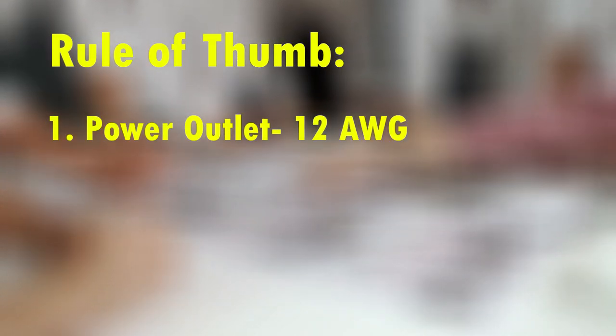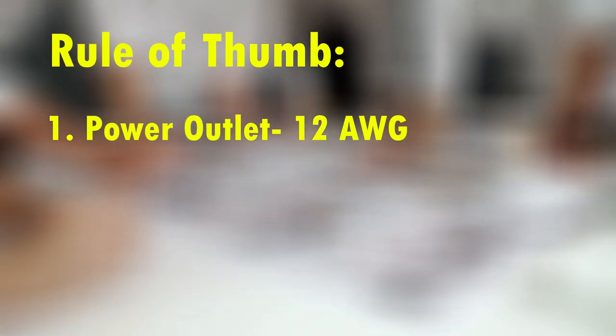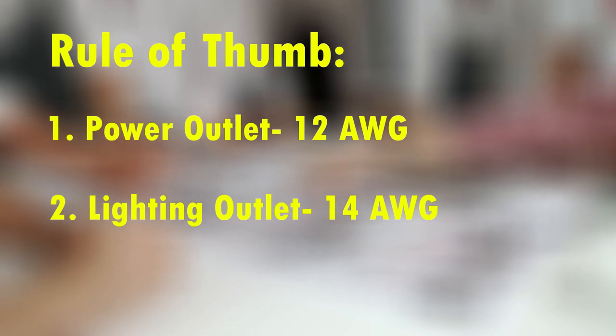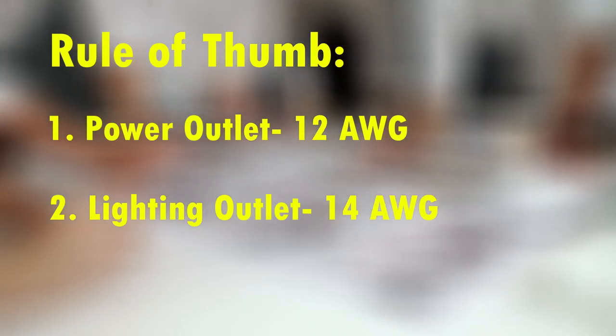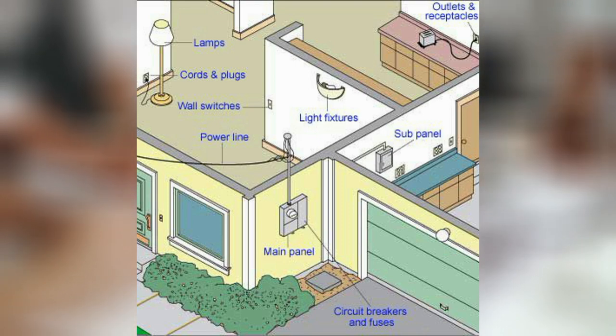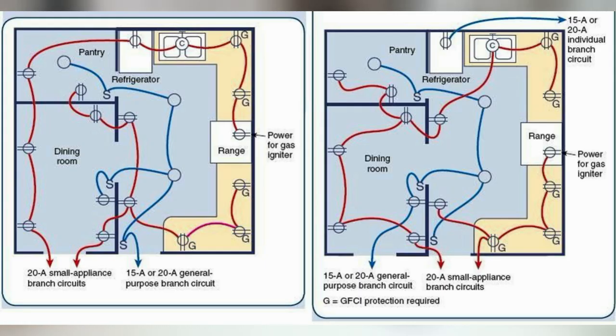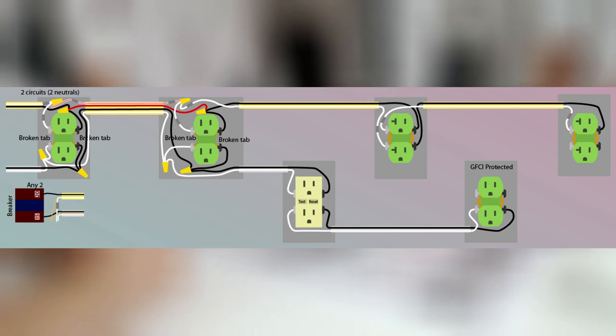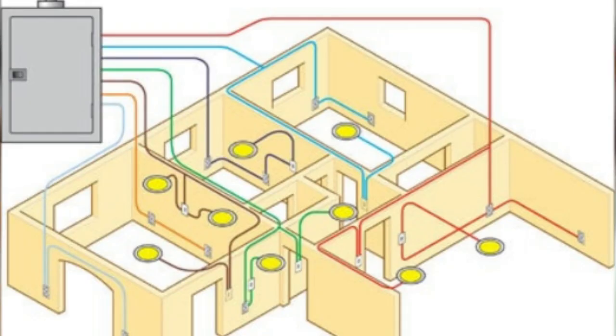Here is a quick rule of thumb: for every single power outlet, 12 American Wire Gauge (AWG) will be selected. For every single lighting outlet, 14 AWG will be selected. But this is not always the case — we cannot assume this will always be safe or economical, especially with multiple outlets or fixtures for branch circuit wire and main circuit cable sizing.